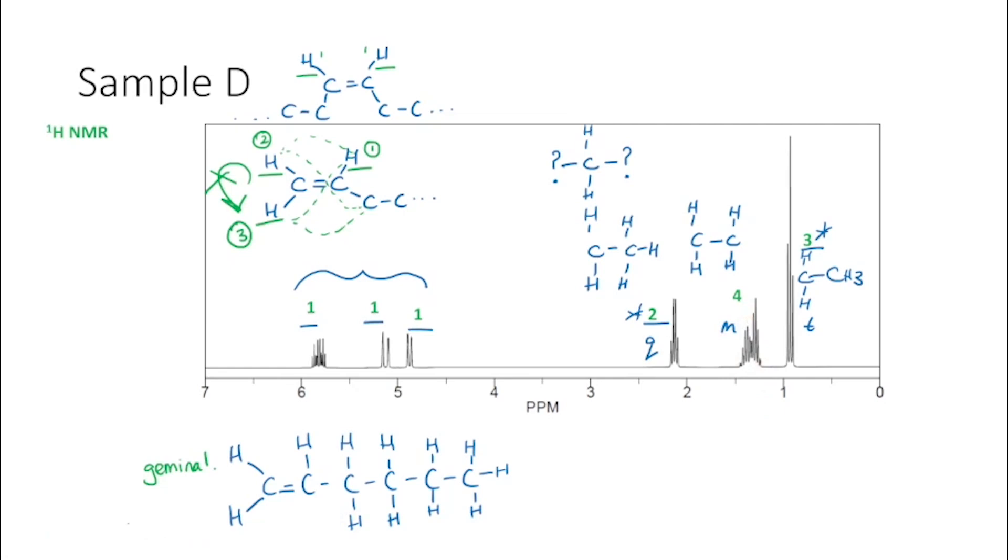So if we assign everything properly, we can say that these are either the signals at about 4.9 or 5.1. This signal here would be at 5.7. This signal here will be about 2.1. So hopefully that approach to working out our molecule would be helpful for you and has made sense.